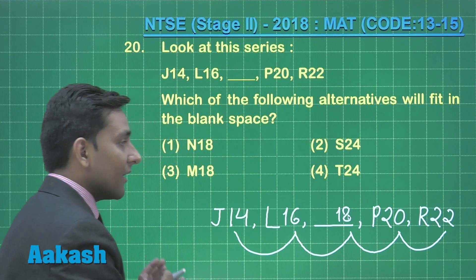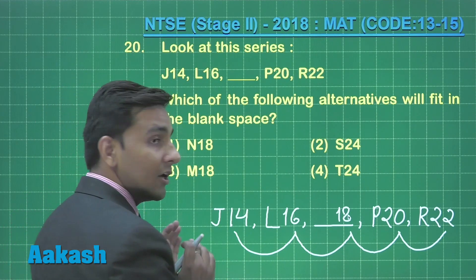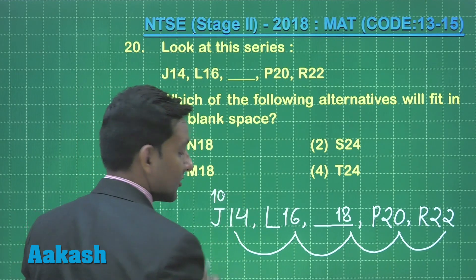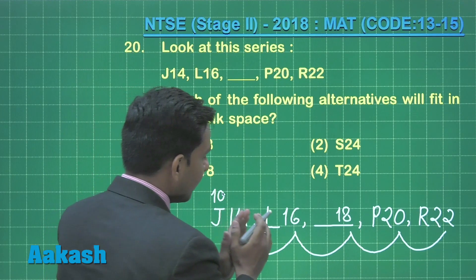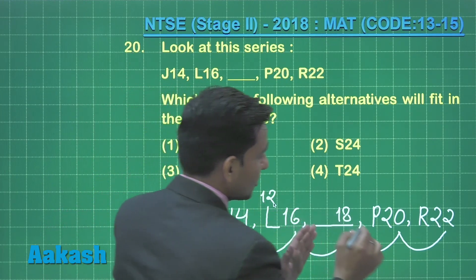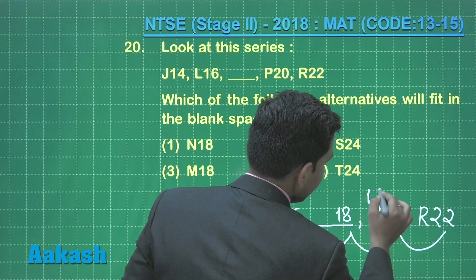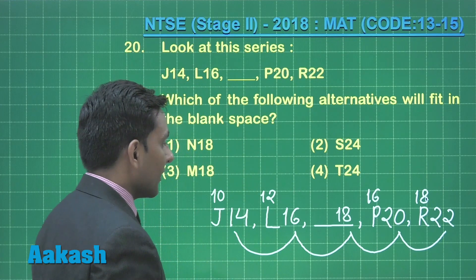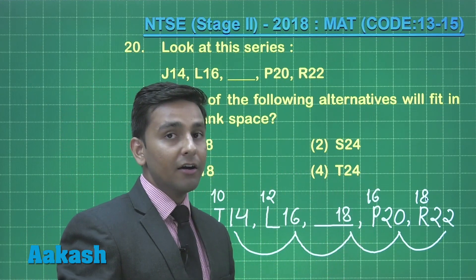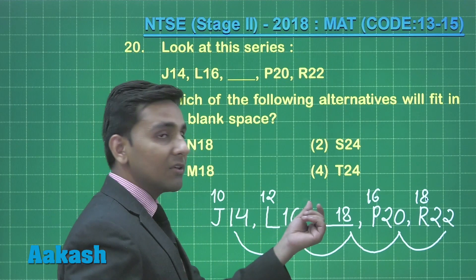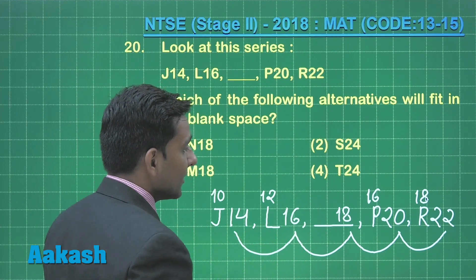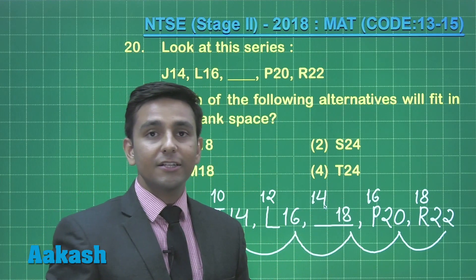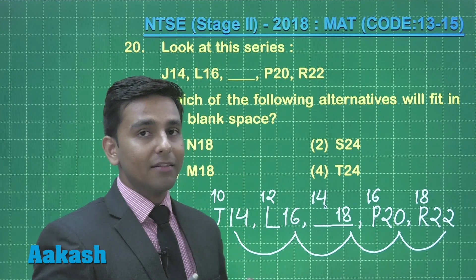Now we are going to find the pattern in the given alphabets. We write the positions of the given letters: the position of j is 10th, l is 12th, p is 16th, and r is 18th in the English alphabet. Looking at the positions 10, 12, 16, 18 — they are consecutive even numbers. So the missing position is 14, which means we have to find the letter whose position is 14th in the English alphabet, and that letter is n.